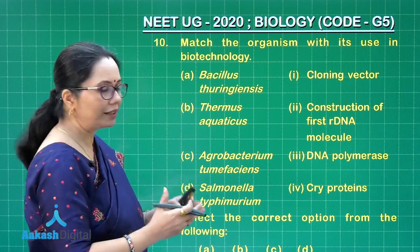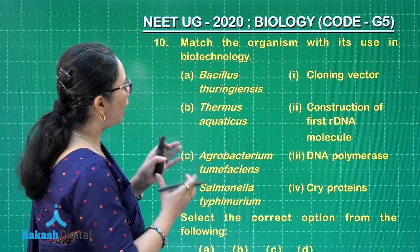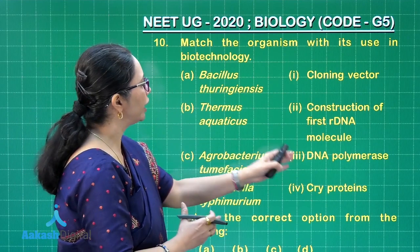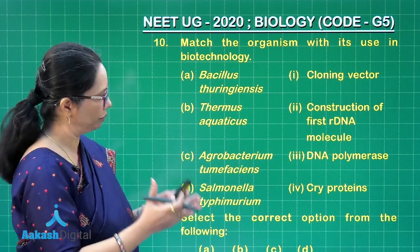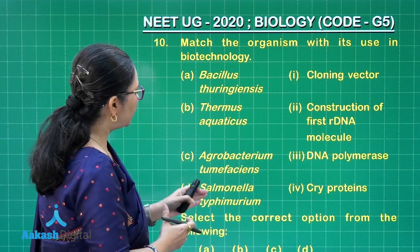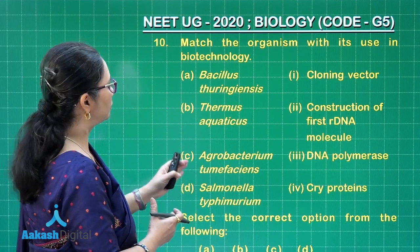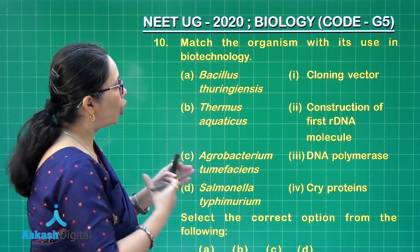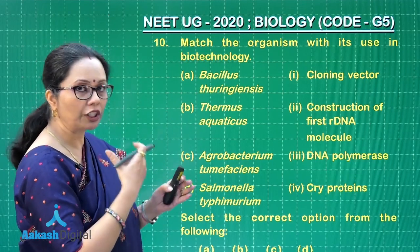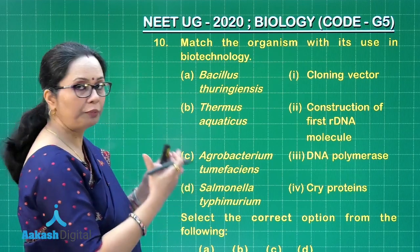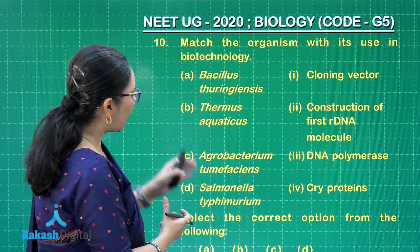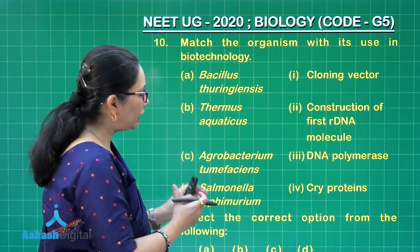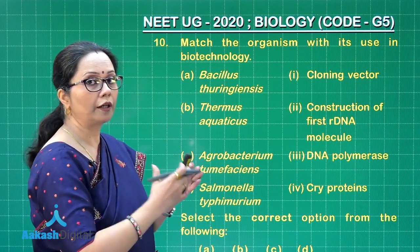Thermus aquaticus is a hot spring bacterium that produces a heat-stable DNA polymerase, which is Taq polymerase. Agrobacterium tumefaciens has the Ti plasmid, which is used as a cloning vector for transforming plant cells, especially dicots.